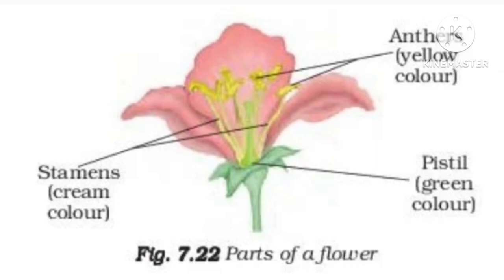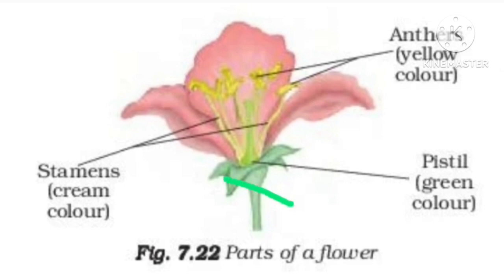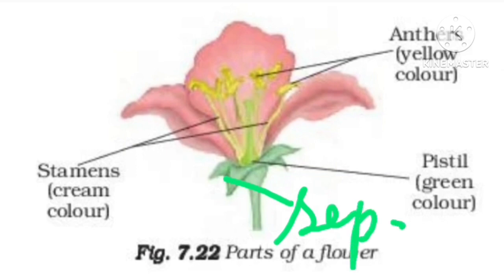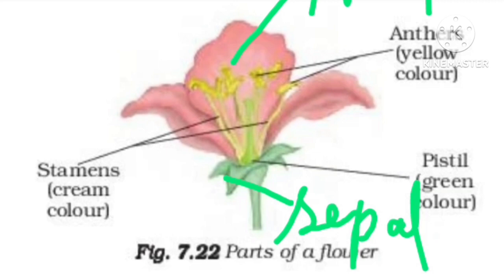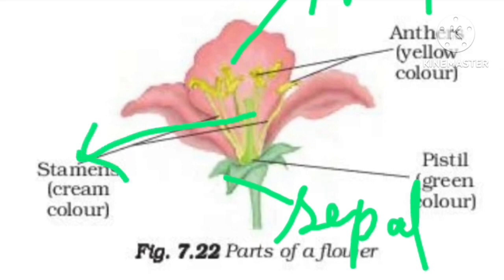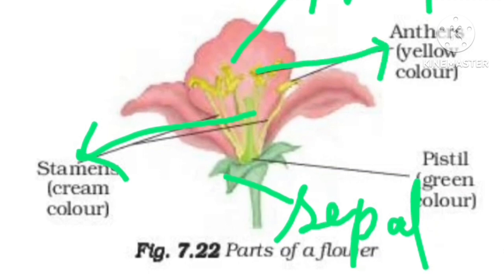Next diagram is flower and parts of a flower. The green parts of the flower are called sepal. The colorful parts are called petals. The cream-colored parts are called stamen. Above the stamen there is a wax-like structure called anther. The green broad part from which stamens emerge is called pistil.